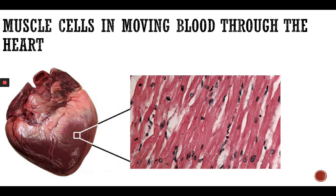Muscle cells and moving blood through the heart — our heart is made of cardiac muscle, and cardiac muscle only exists in the heart. It contains cardiac muscle cells which perform highly coordinated actions that keep the heart pumping and blood circulating throughout the body. Unlike skeletal muscle tissue, the movements of cardiac muscle tissue are produced involuntarily. We cannot voluntarily beat our heart — it beats involuntarily.